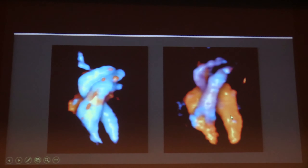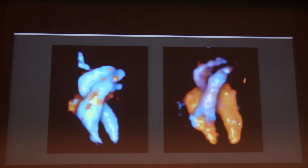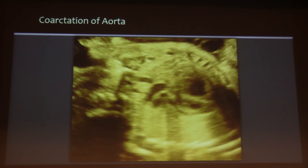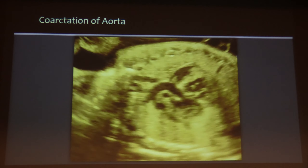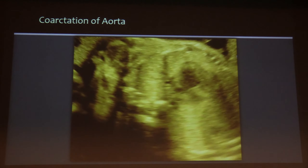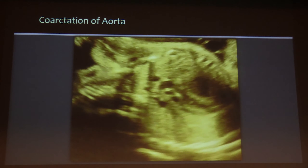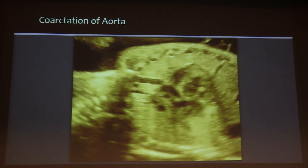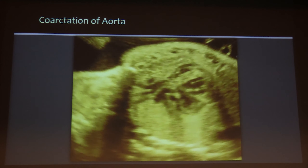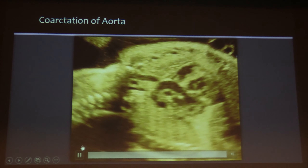During systole, one can see the reddish inflow into the ventricles. Now I will give a few other examples with the advantages of 3D. We start with one of the most difficult diagnoses that we have, which is the coarctation of the aorta.